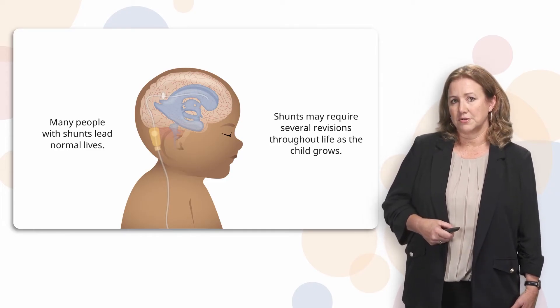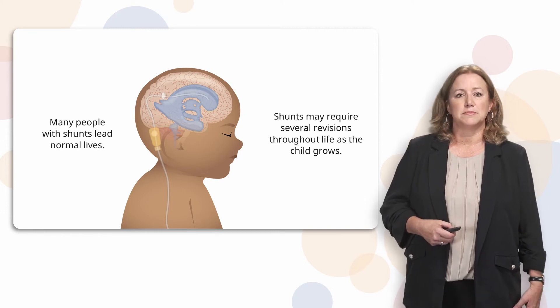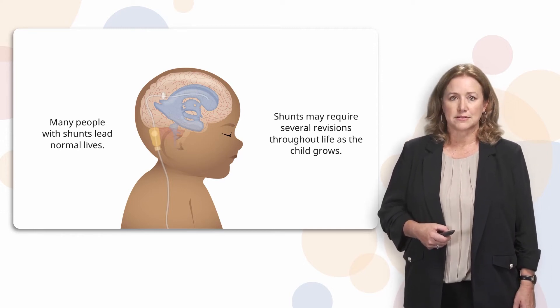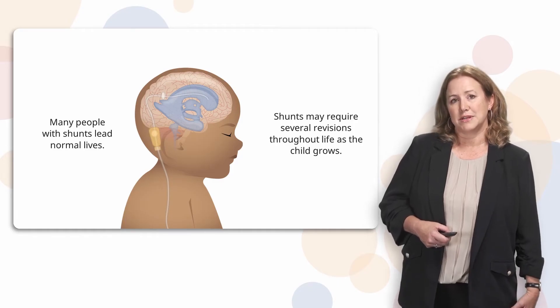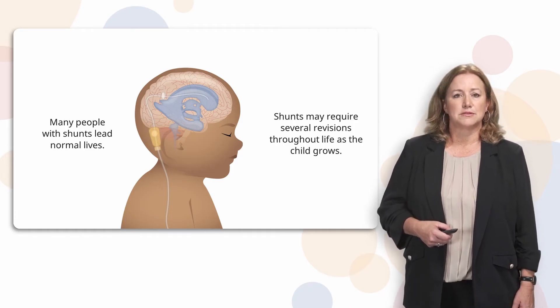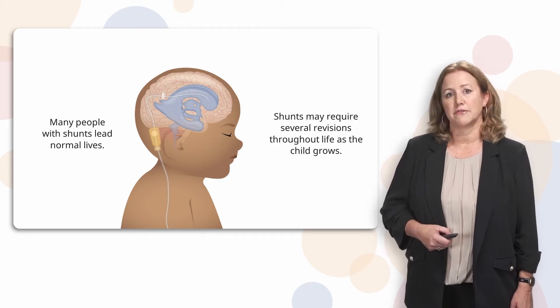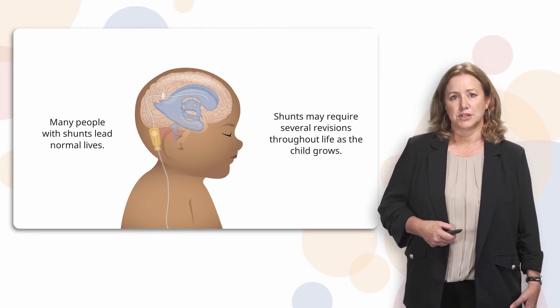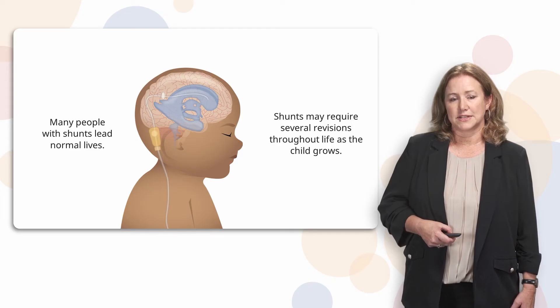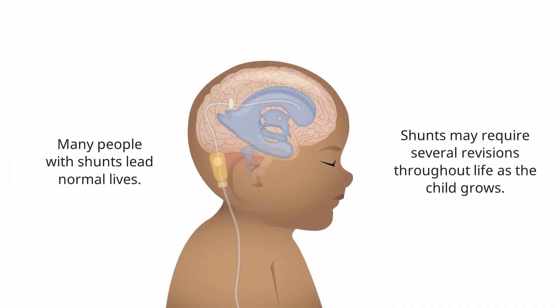Shunts can also get blocked and need to be surgically repaired or replaced. So anybody that has a VP shunt and comes in to a hospital or any kind of healthcare facility needs to be seen urgently if they're having any signs and symptoms that might indicate a problem with the shunt, such as head pain, vomiting, or other signs and symptoms of neurologic problems.